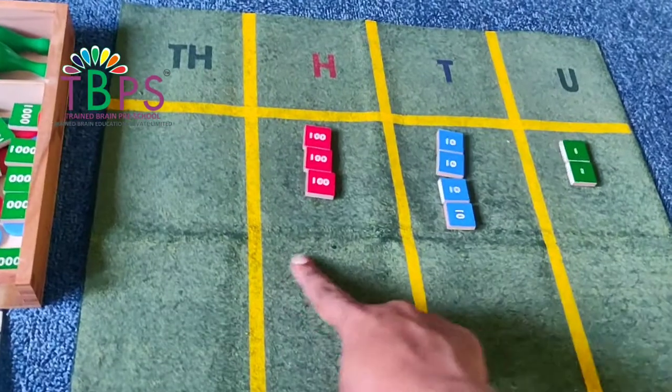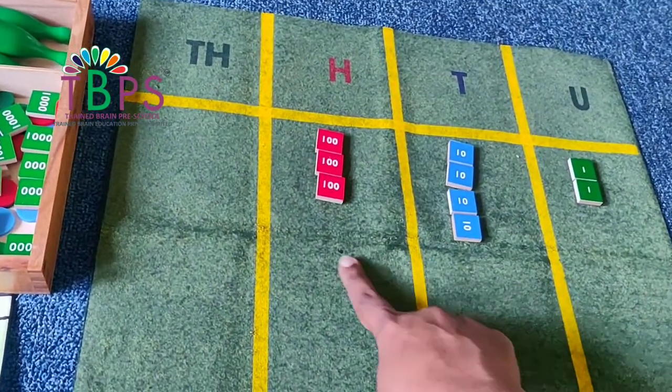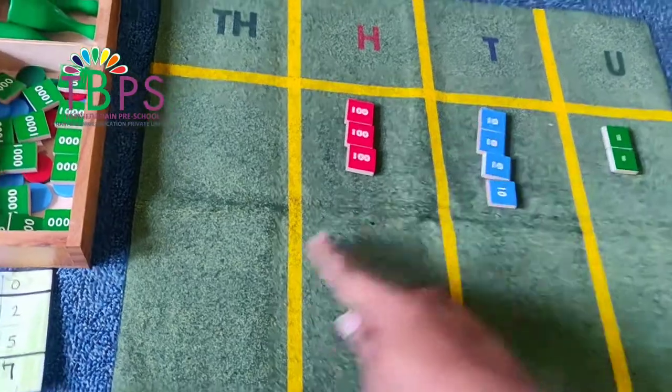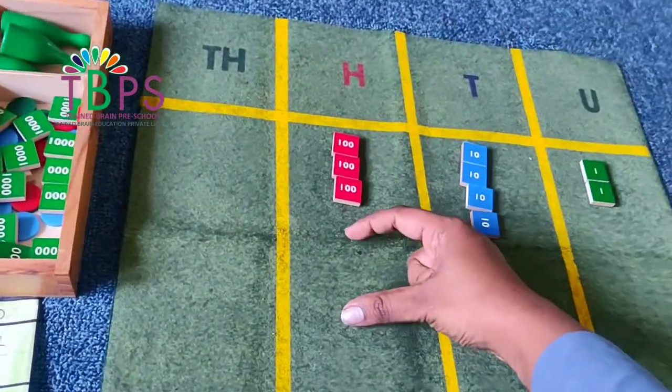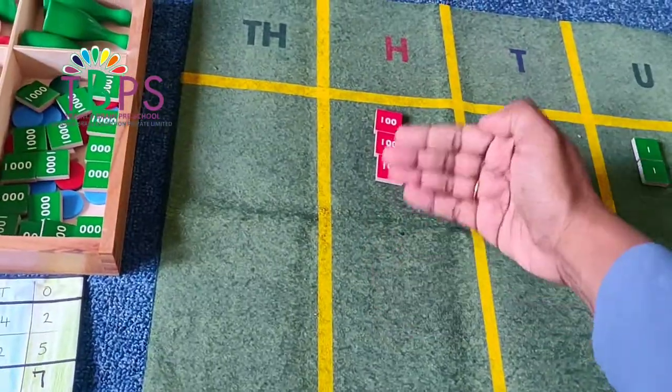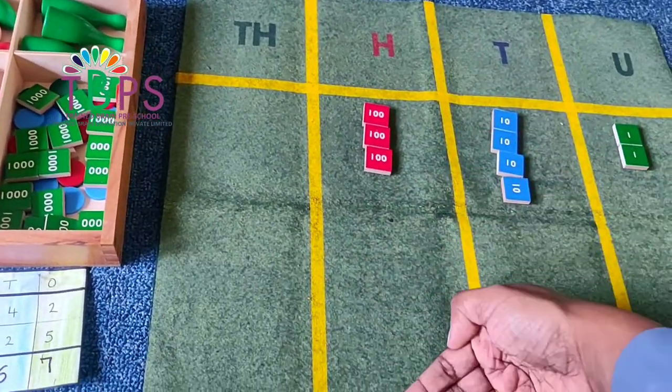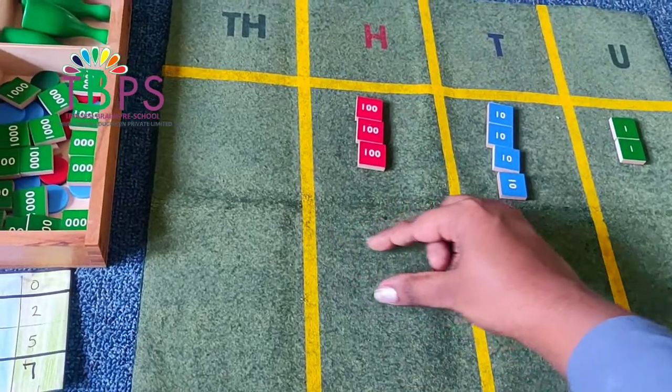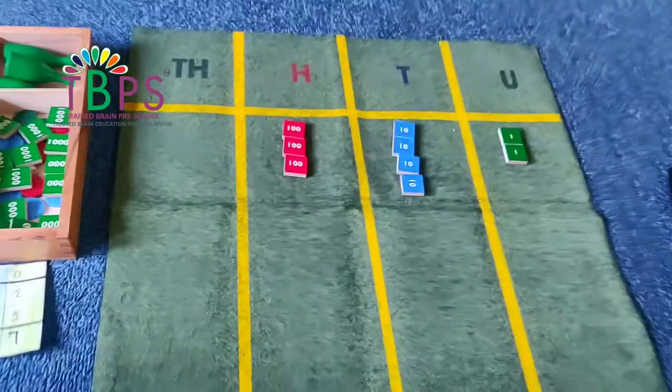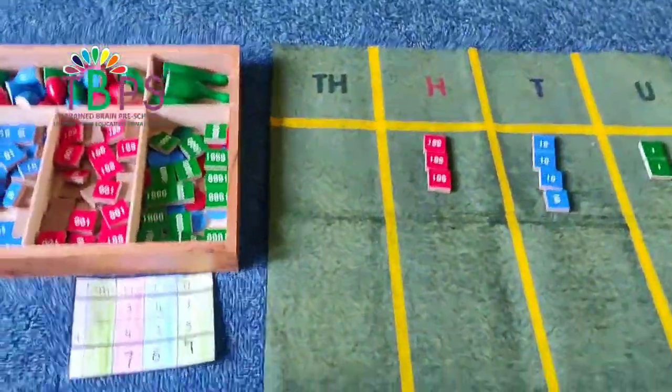Now you have arranged your first number. Now let's arrange the second number. You can either draw a line here or give some space so the child will be able to differentiate between the two numbers, or you could also place the ruler so that the child gets the identification.